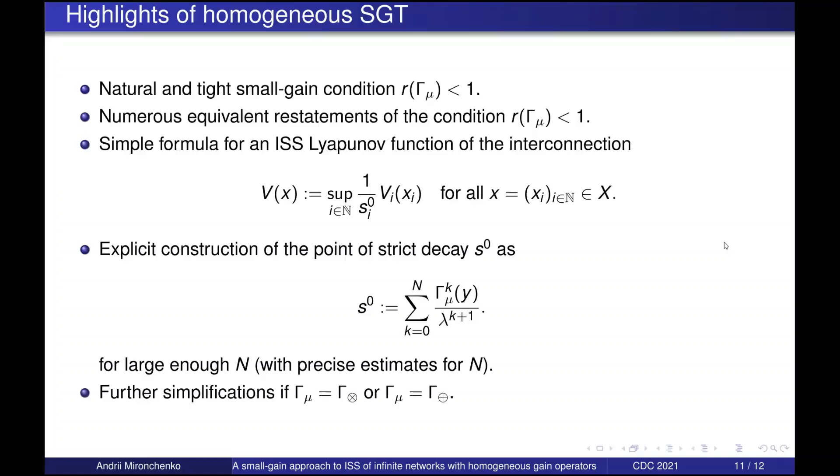So let me give some highlights. What we obtain is natural and tight small gain conditions. And we have numerous equivalent restatements for this condition in the paper, which I do not present here. Thanks to this flexibility to take mu as we would like, we can treat many different applications. Also, we obtain a simple formula for a Lyapunov function for an interconnection. And moreover, we can even explicitly compute this point of strict decay s_0 by this formula, where n is some number which is large enough, and we can even compute how large it must be. Further simplification can be shown if our gain operator is purely maximum or purely sum operator.